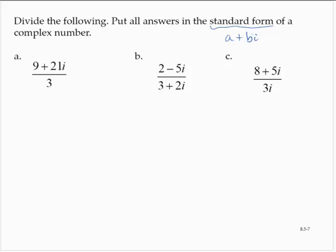So here we have 9 plus 21i over 3. That's not standard form because the real and imaginary part aren't really separated. So here what we can do is write this as 9 over 3 plus 21 over 3i, and simplify that. So that would be 3 plus 7i, and that's the standard form.